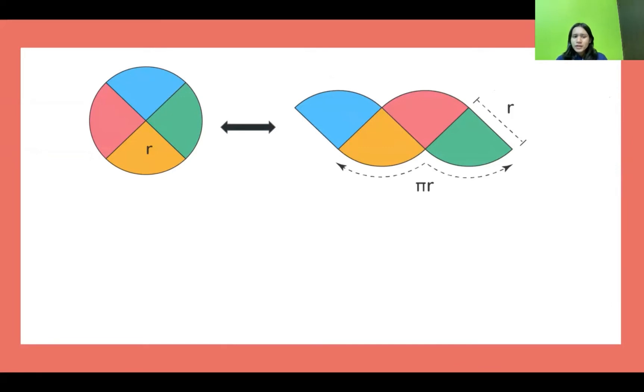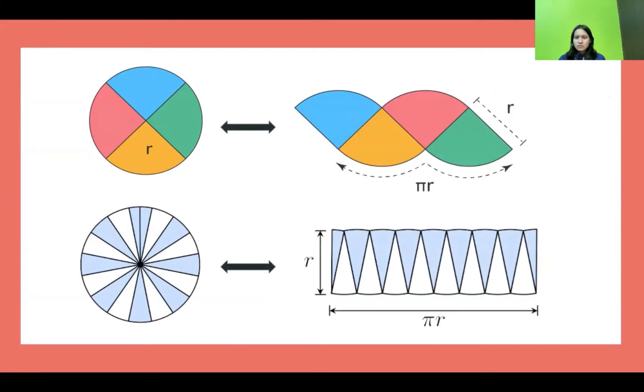Now when we take another circle and divide into smaller parts, and we assemble it like before, then yes, it almost looks like a parallelogram.